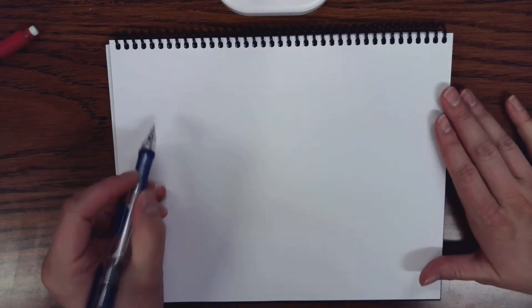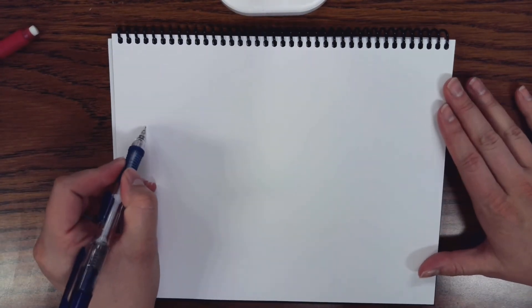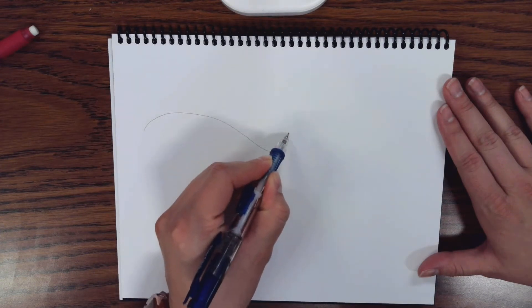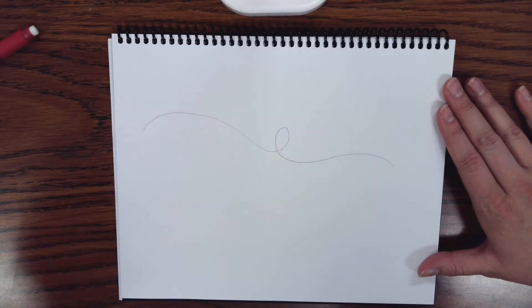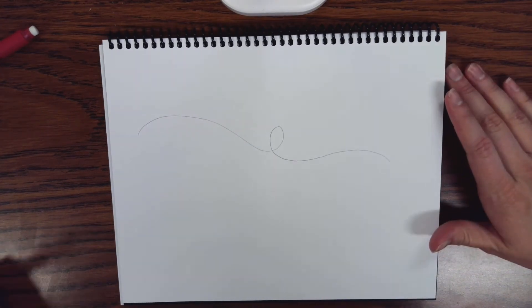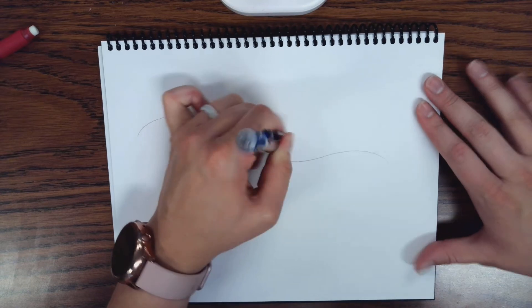Okay, so we're going to start with one long line. It's going to come out, loop, and back. I'm going to fix my loop because I think it's a little too big.